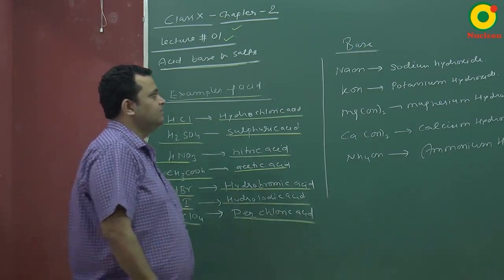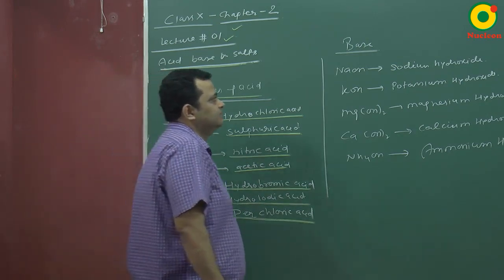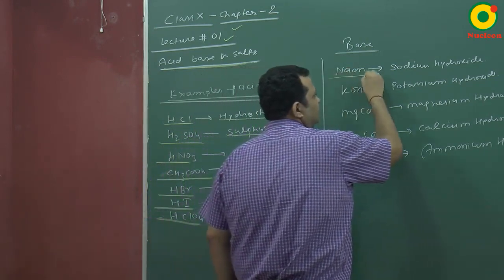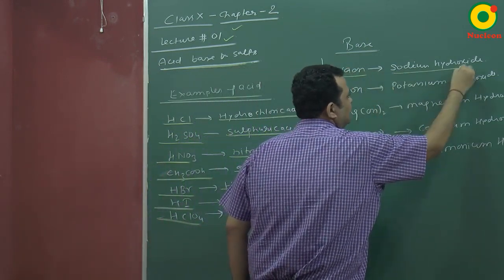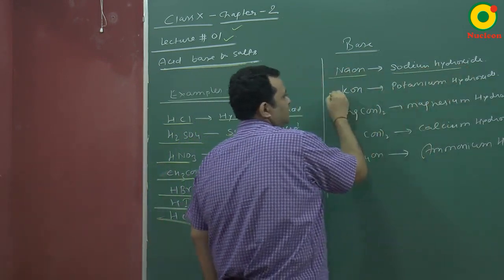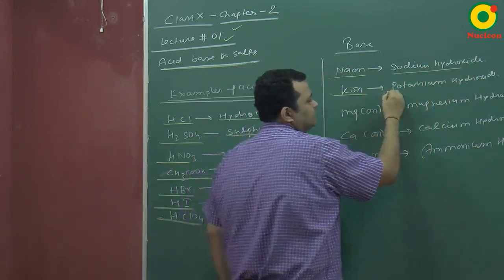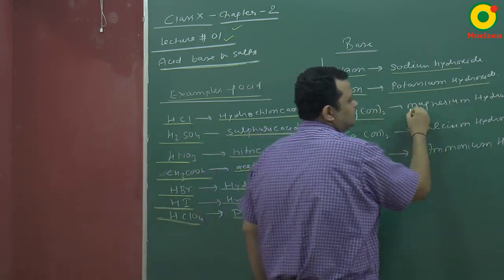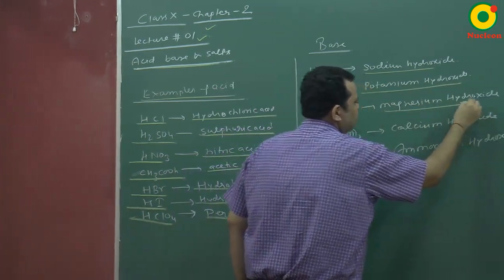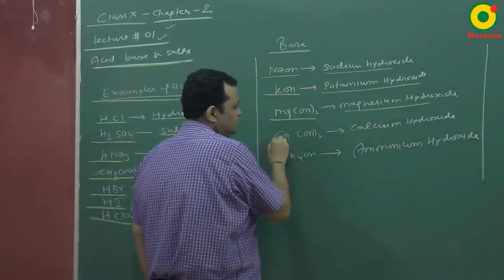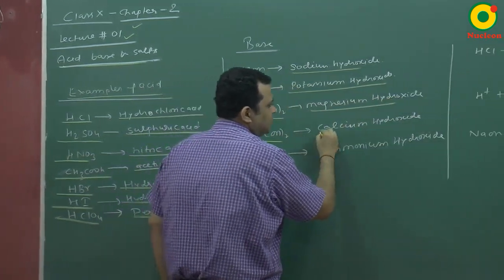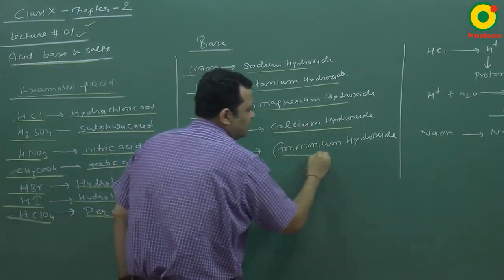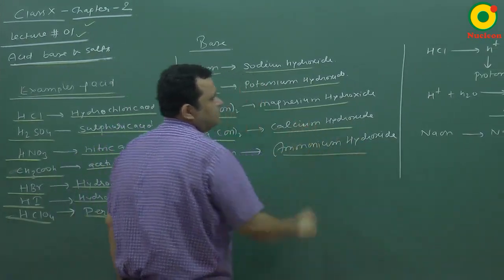Now examples of bases: NaOH is sodium hydroxide. KOH is potassium hydroxide. Mg(OH)2 is magnesium hydroxide. Ca(OH)2 is calcium hydroxide. NH4OH is ammonium hydroxide.